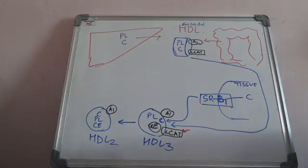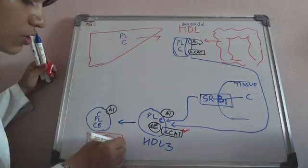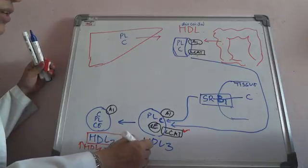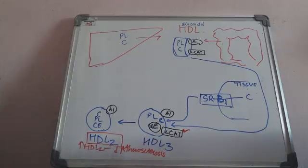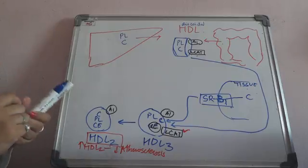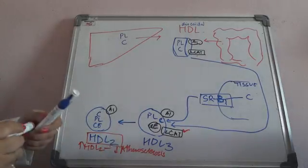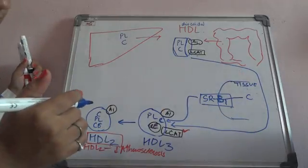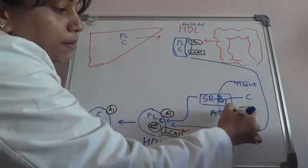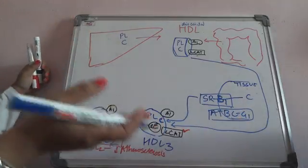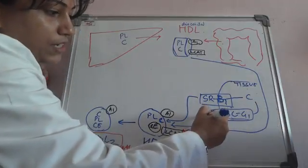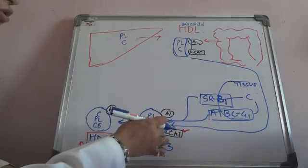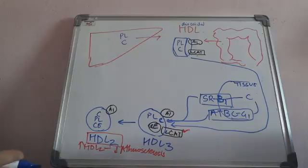Now over here, what we can see is that HDL2 is inversely related to atherosclerosis. If there is more HDL2, that is less atherosclerosis. This point you have to know. There is one more thing which could give cholesterol to HDL3 — it is called ATP binding cassette protein G1 or ATP binding cassette transporter G1. It will also take the cholesterol from the tissue and give it to HDL3. LCAT will esterify the cholesterol and it will give to HDL2.